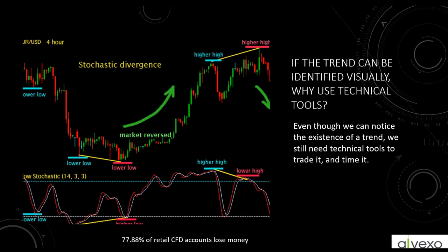Trend trading doesn't necessarily use indicators — it uses the price on a chart. But we can combine things like volume. Volume should be steadily increasing as the trend moves up, and each time we see the trend making a higher high, volume should ease back down as it makes a lower high, then move back up toward the next higher high. Volume helps support your understanding of what the markets are doing.